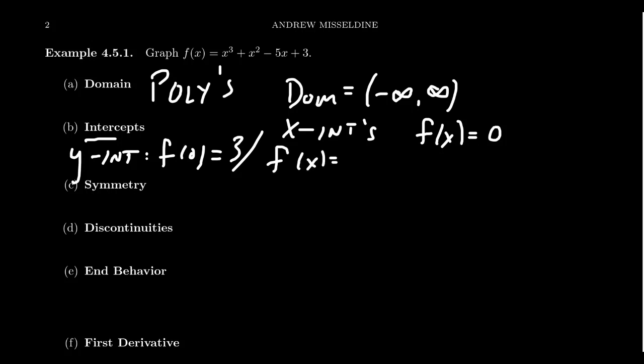But if one goes about factoring this thing, you see that it factors as (x + 3)(x - 1)². So this tells us specifically that our x-intercepts are going to equal negative 3 and positive 1.